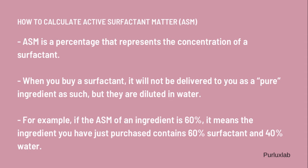So first of all, what is active surfactant matter? Active surfactant matter is the percentage that represents the concentration of a particular surfactant. Whenever you purchase a surfactant, it is not always in the pure form — it has already been diluted, which is why you need to calculate the actual amount of surfactant present in that solution. For example, if the ASM of a particular cleansing surfactant is stated to be 60%, it means that surfactant actually contains 60% active surfactant and the remaining 40% is water. So in order to use the right amount in your formulation, you need to know the ASM value of that particular surfactant.